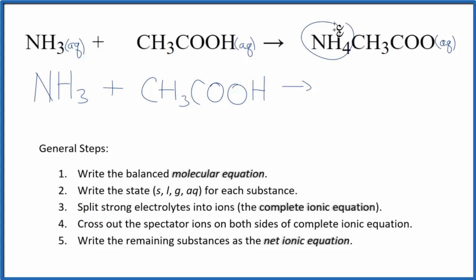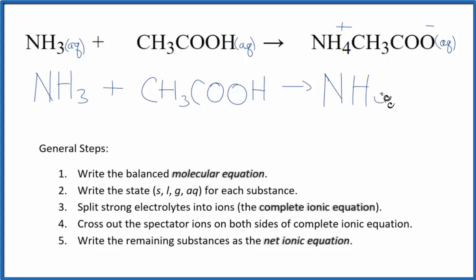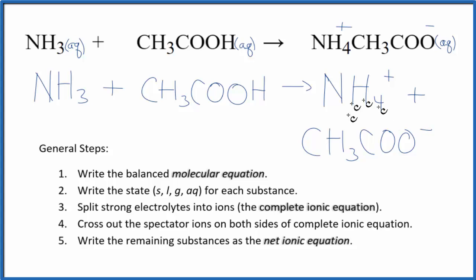The ammonium ion, NH4, is always one plus. The acetate ion is always one minus. So when we split them apart, we'll have NH4 plus, plus the acetate ion CH3COO minus. These will be the products.